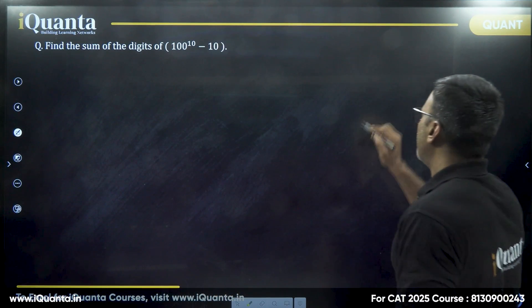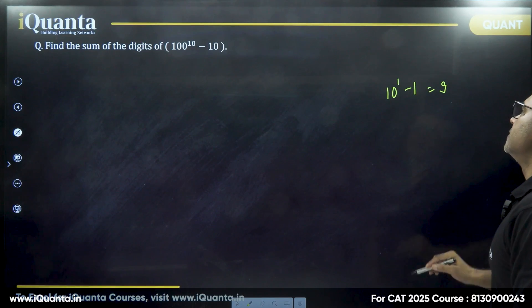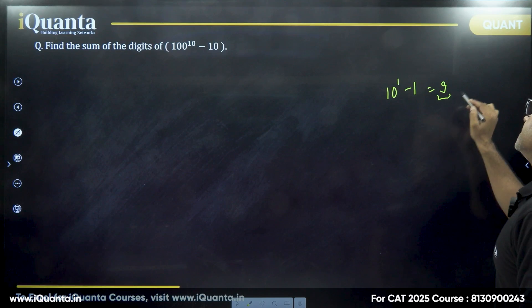First of all, when I say 10 to the power 1 minus 1, it is equal to what? It is equal to 9. So how many digits are there? There's just one digit.